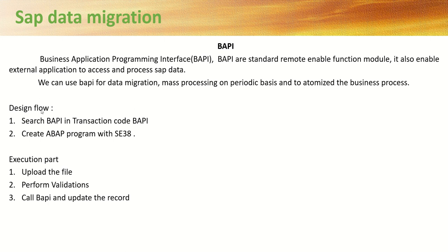The design flow in BAPI is as follows. First, we have to search for the required BAPI using the transaction code BAPI. For every transaction code — for example, purchase order or sales order — there are different BAPIs available, so we have to search for the respective BAPI. After that, we have to create the program with SE38 so that we can upload the file and do the field mapping with the BAPI and process that program.